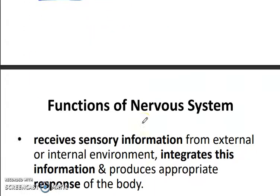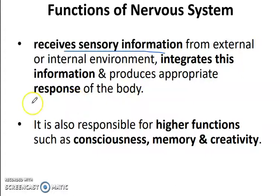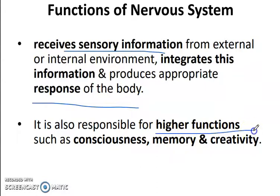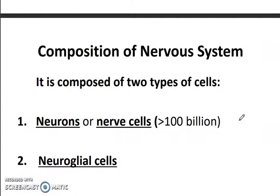The nervous system performs functions like contractions of muscles and secretion of glands. It receives sensory information from the external or internal environment, integrates it, and produces the proper response. It is also responsible for higher functions such as consciousness, memory, and creativity.